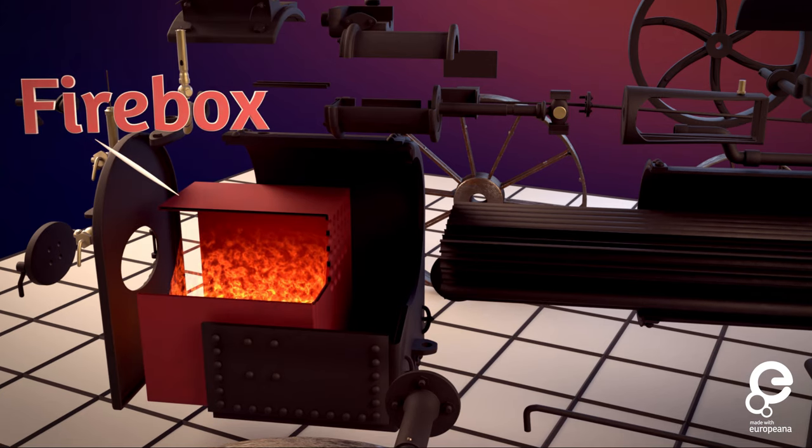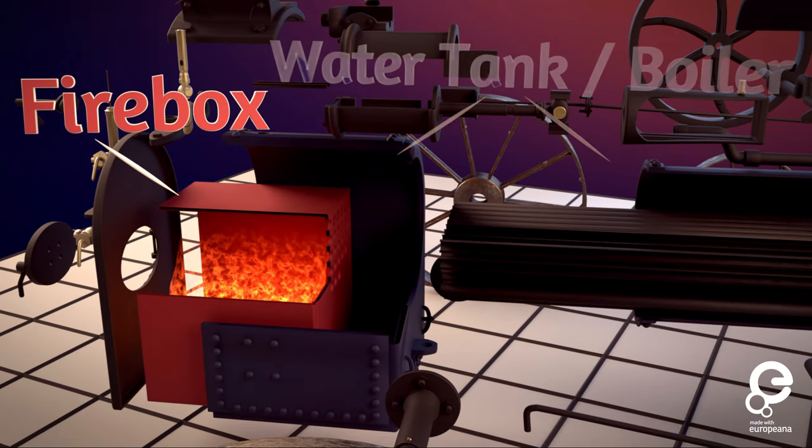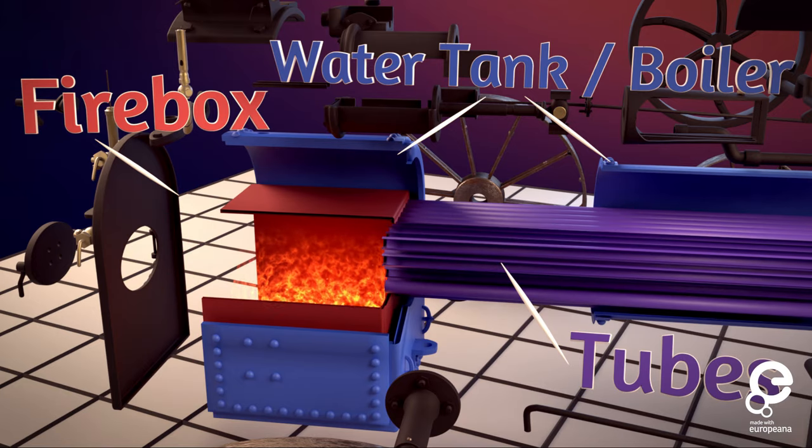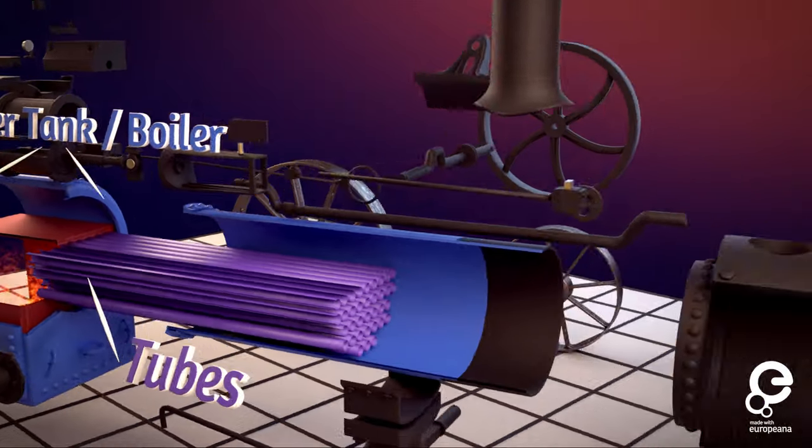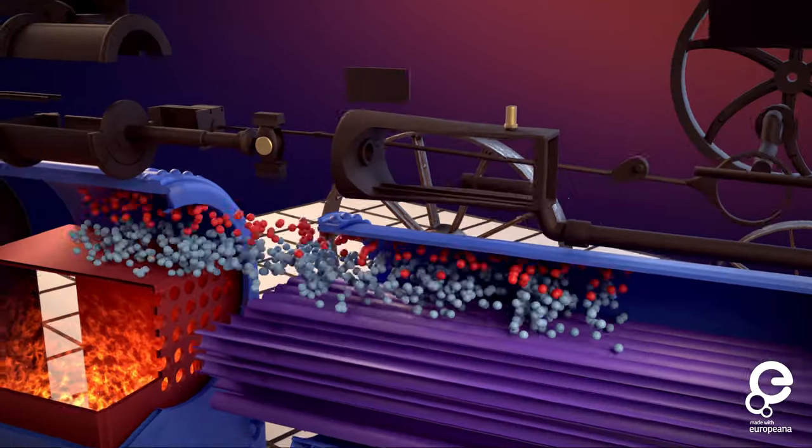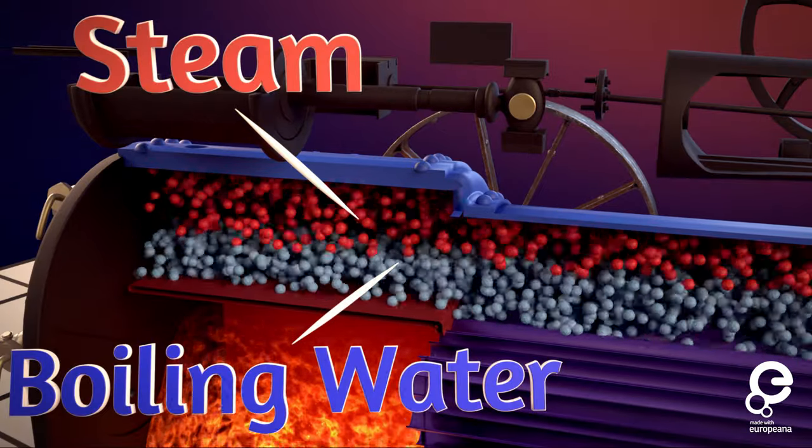Here we have a firebox for burning coal. The firebox heats up a sealed tank of water, and a set of tubes submerged in the water carry the hot fumes from the firebox to the smokestack. At the top of this tank of water is a sealed space where the water is boiled into high pressure steam.